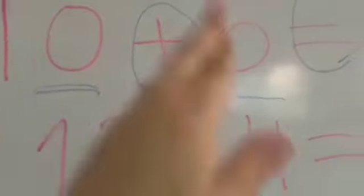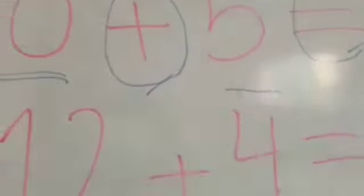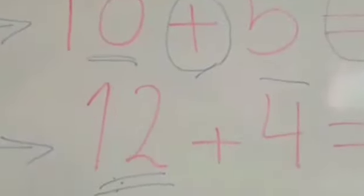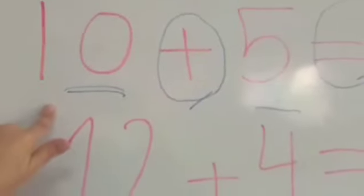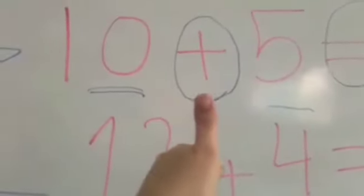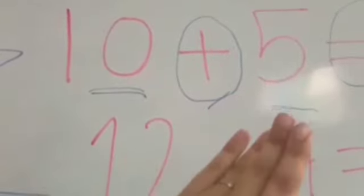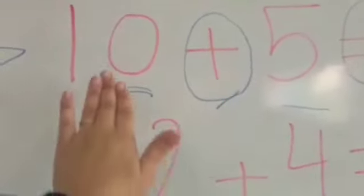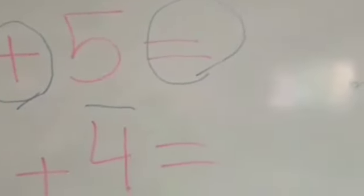Okay. And what can we do with the smallest number? Smallest number, keep it in my mind. Excellent. Okay. And count after 10: 10, 11, 12, 13, 14, 15. So, 10 plus 5 equals 15.